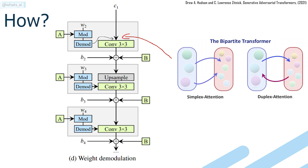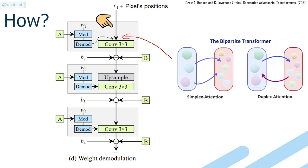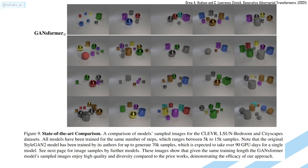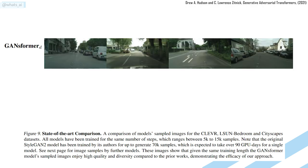Rather than focusing on global information and controlling all features globally as convolutions do by nature, they use attention to propagate information from local pixels to the global high-level representation, and vice versa. This attention layer takes the pixel's position and the StyleGAN2 latent spaces W and Z. The latent space W is an encoding of the input into an intermediate latent space done at the beginning of the network, denoted as A, while Z is the resulting features of the input at the current step. This makes the generation much more expressive over the whole image, especially for multi-object scenes.